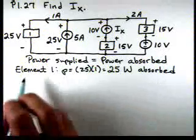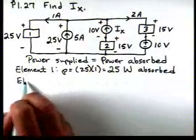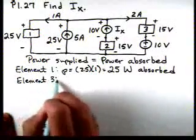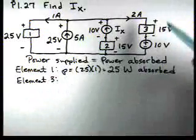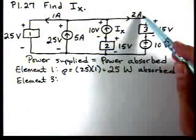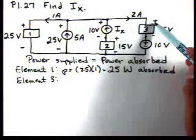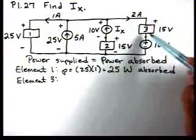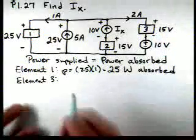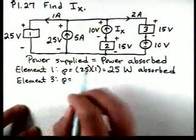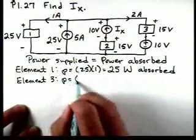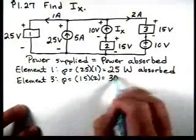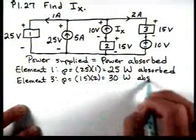For element three, we see that the current is entering the plus and leaving the minus — those satisfy the passive sign convention. So for element three the power absorbed is 15 times two, which is 30 watts absorbed.